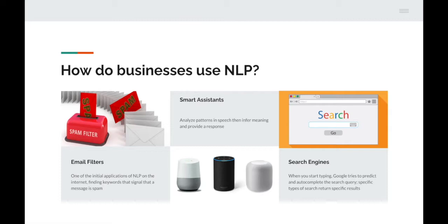A lot is happening in the background to make that simple instruction work on a smart assistant. Next up is search engines. When you start typing, Google tries to predict and auto-complete the search query. For example, if you type in a calculation, Google automatically detects it and brings up a calculator. When you type 'weather London' it brings up a weather widget. When you type a stock ticker symbol, it detects you want financial information and brings up news along with the stock price. NLP is used here.